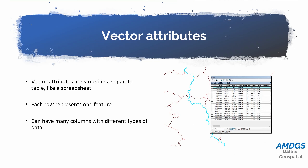Each of our features within a vector data set has what we call an attribute table linked to it, and an attribute table is pretty much an Excel spreadsheet — in some GIS data types we can open the attribute table directly in Excel. So if we click on one vector feature, it corresponds to a row within the attribute table. In the example shown, a blue line on the map represents a road or pathway in a vector data set, and we can see from its attribute table that it has an ID number, a line type of polyline, and that this is a bicycle route.